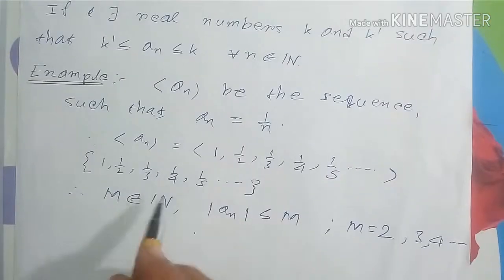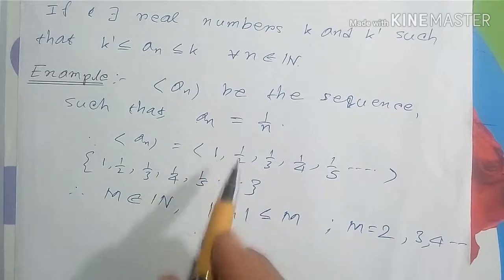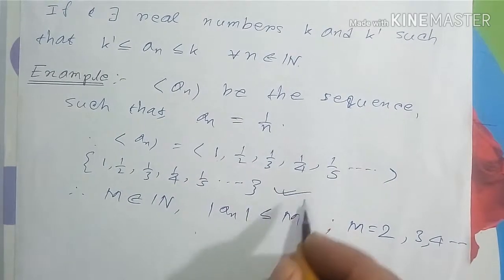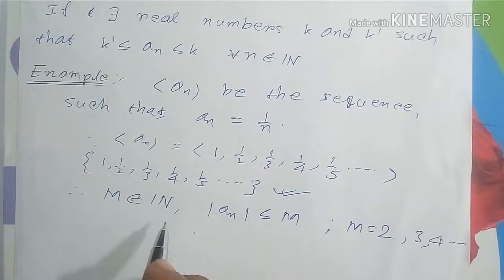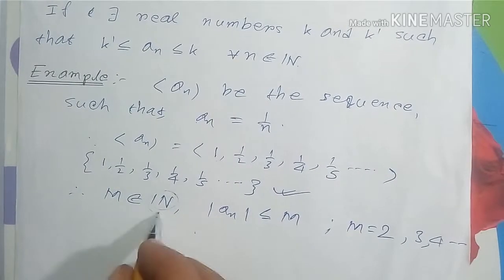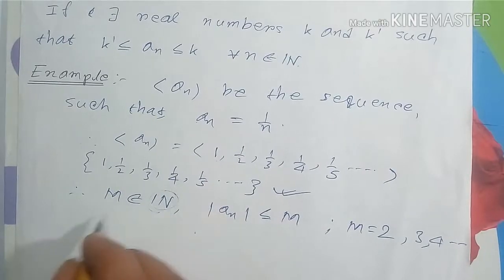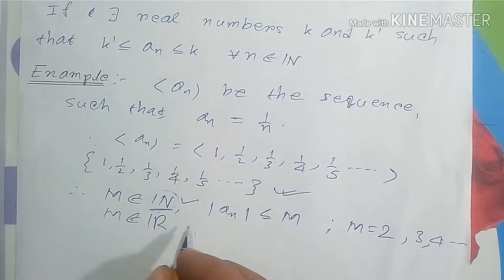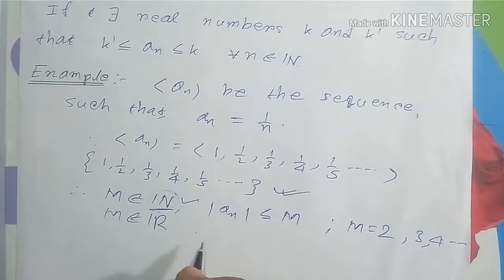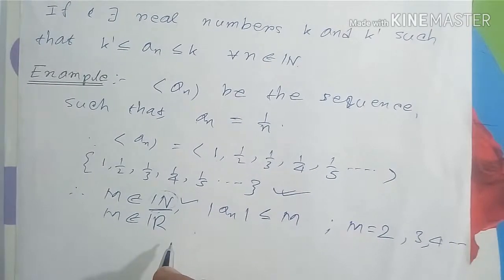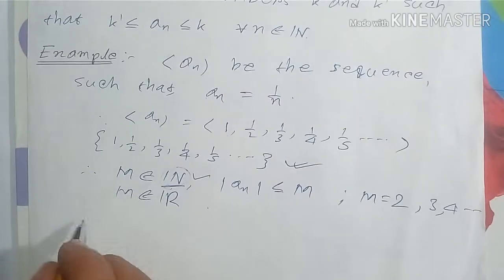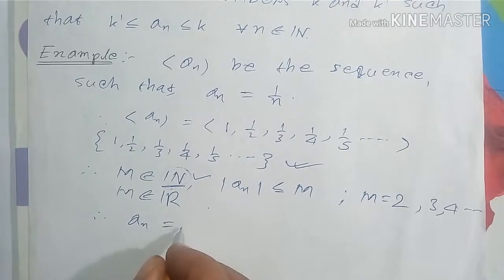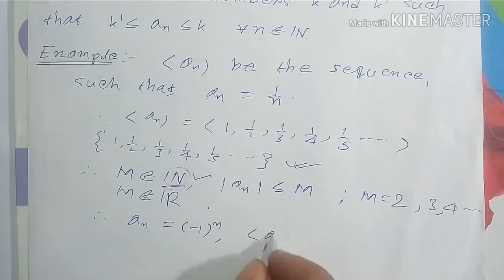For the sequence a_n = 1/n, its range set is {1, 1/2, 1/3, ...} and there must exist one real number M — which may be a natural number or any real number — such that the sequence is bounded. Now for another example, suppose a_n = (-1)^n.